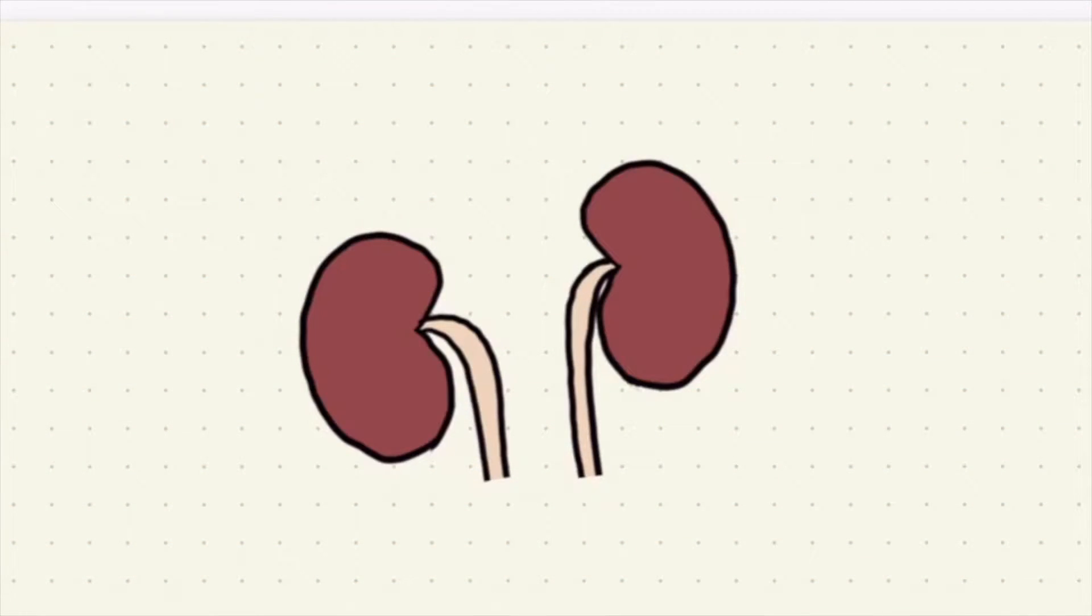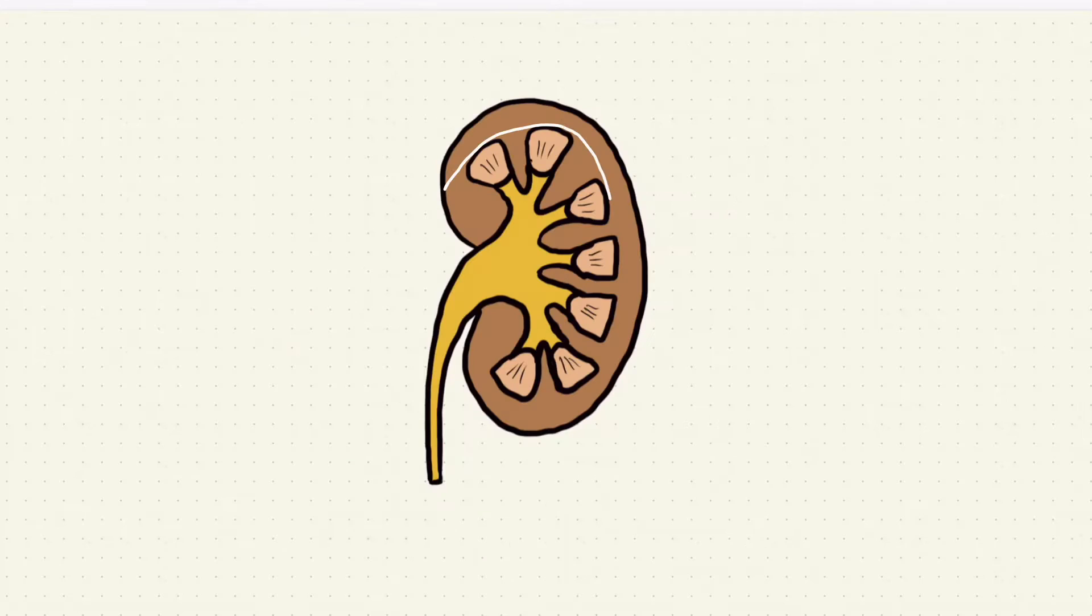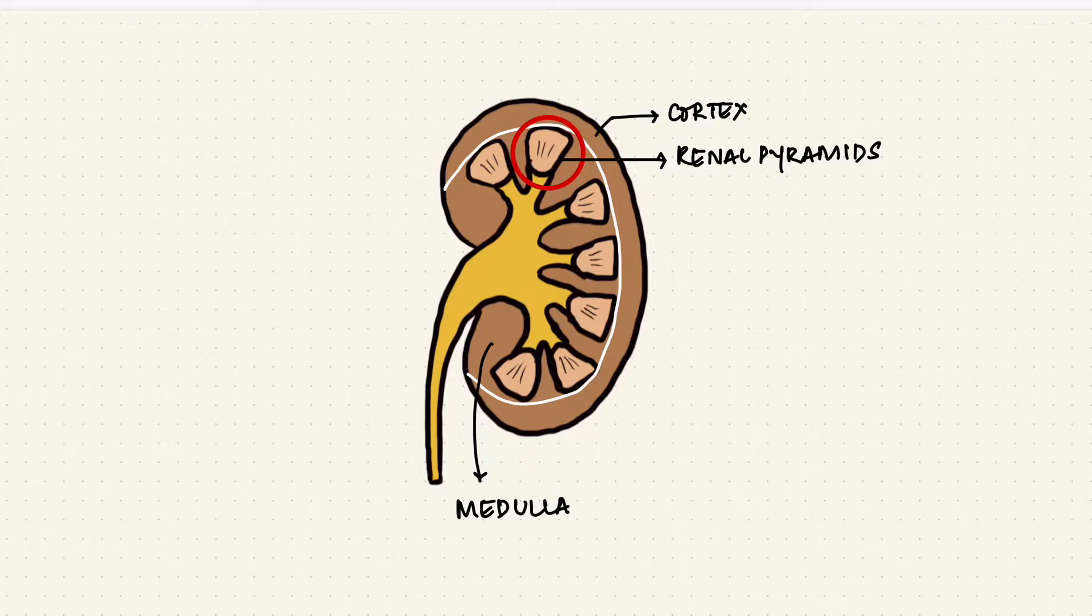There are two kidneys. Each kidney has an outer cortex and an inner medulla. The medulla is further divided into these little triangles called renal pyramids. So the base of pyramid is at the border and the apex or the papilla of the pyramid has renal calyces.